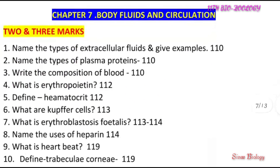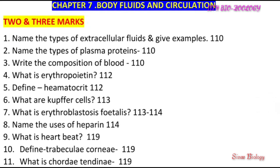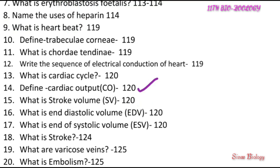Question number 7: erythroblastosis fetalis. Types of plasma proteins, then heartbeat. Cardiac output, cardiac cycle, stroke volume. Question number 12: sequence of electrical conduction of heartbeat.